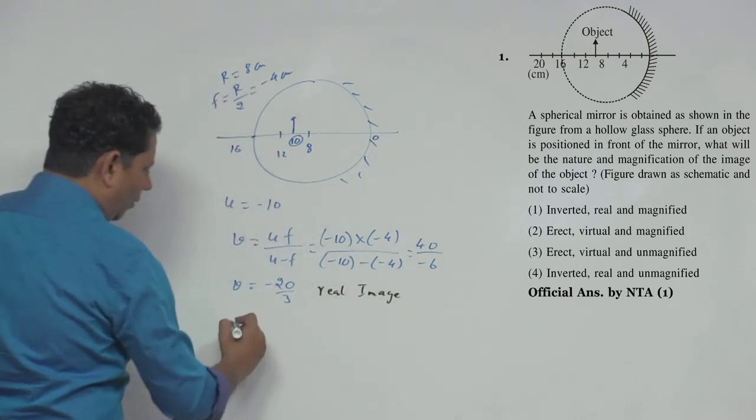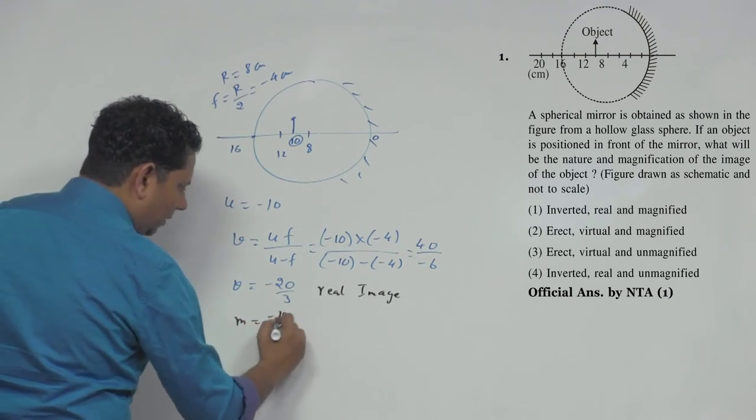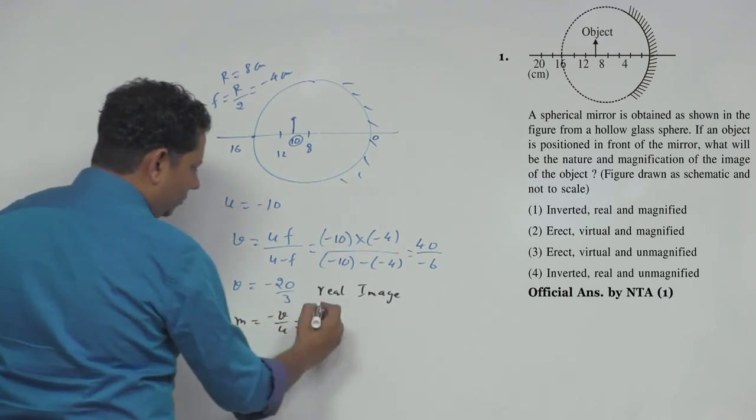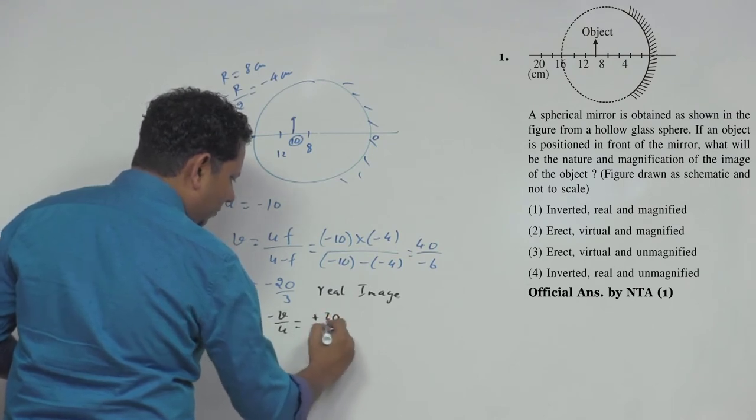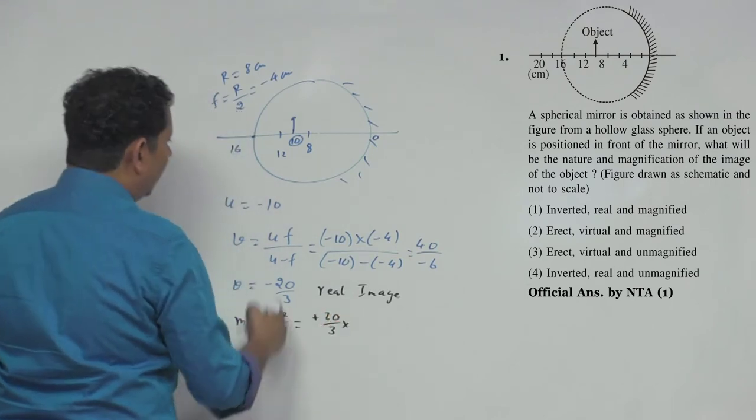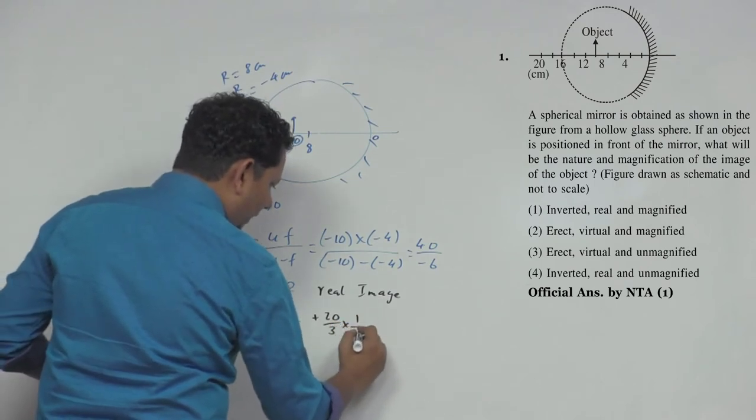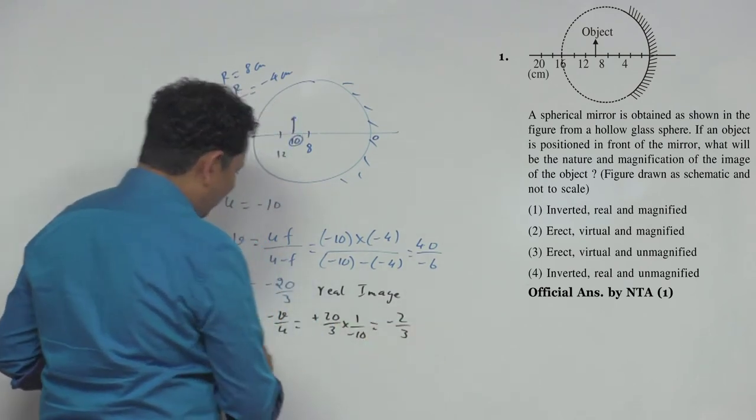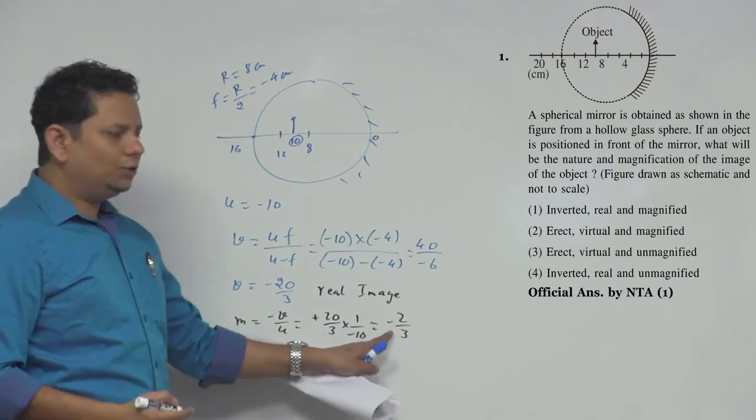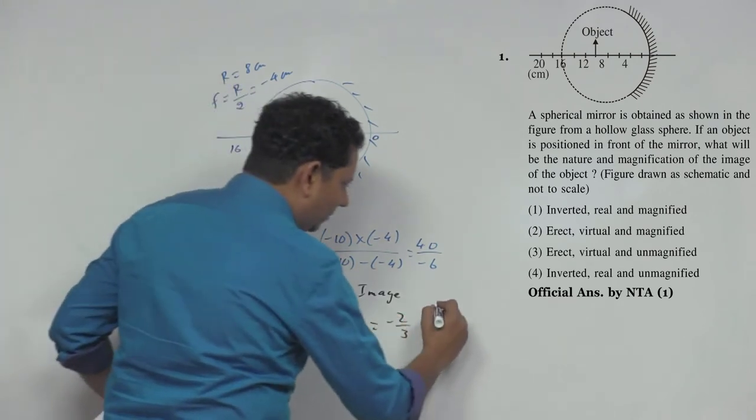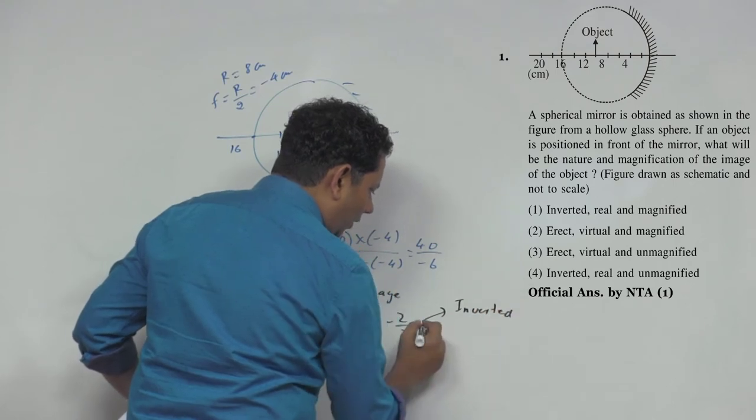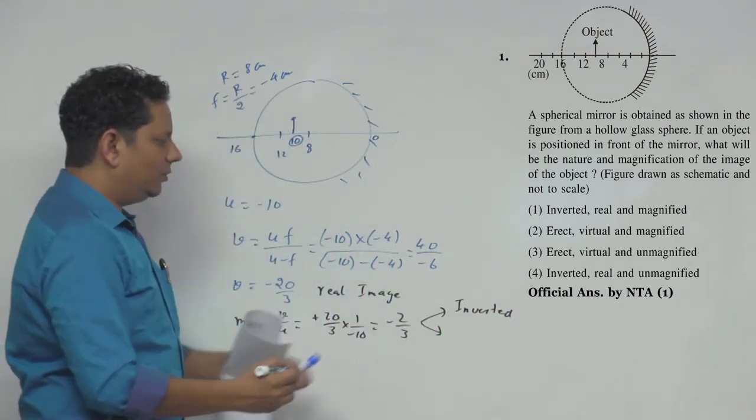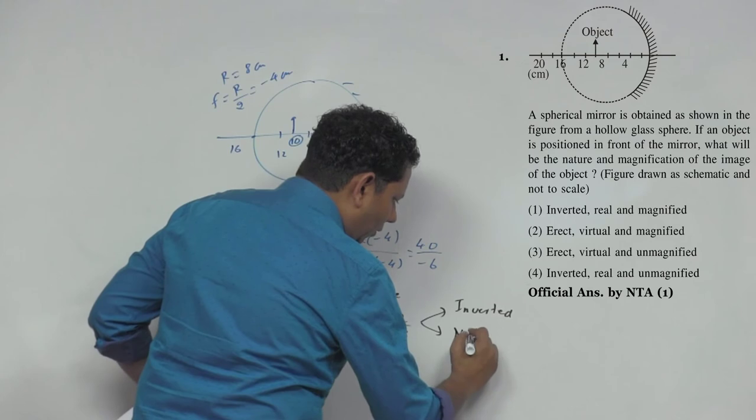Real image होएगी और magnification देखेंगे. We write minus v by u. This becomes minus of minus, meaning plus 20 by 3 multiplied by u which was minus 10. So इसकी value आ गई minus 2 by 3. Since m is negative, आप interpret कर सकते हैं as inverted. And इसकी value is less than 1, so इसका मतलब होएगा non-magnified, meaning smaller.